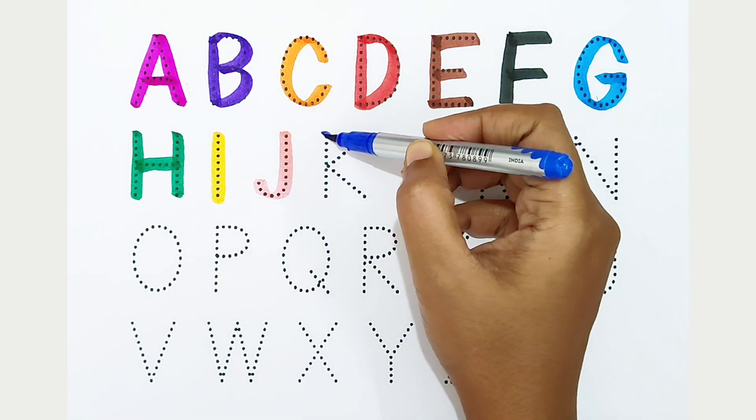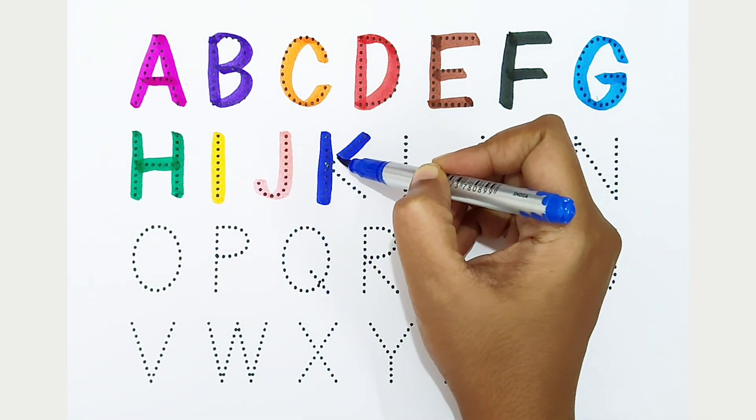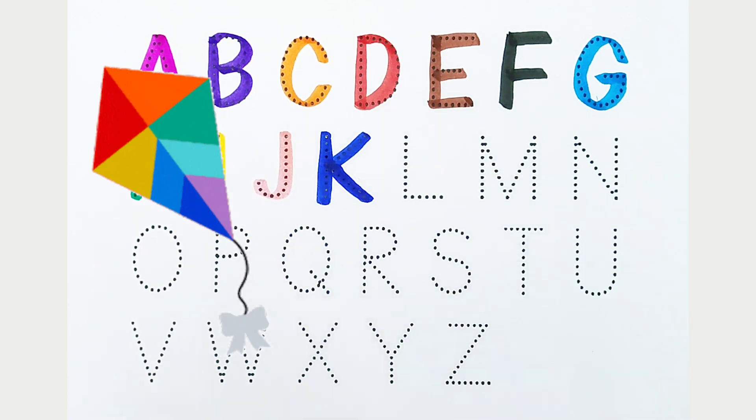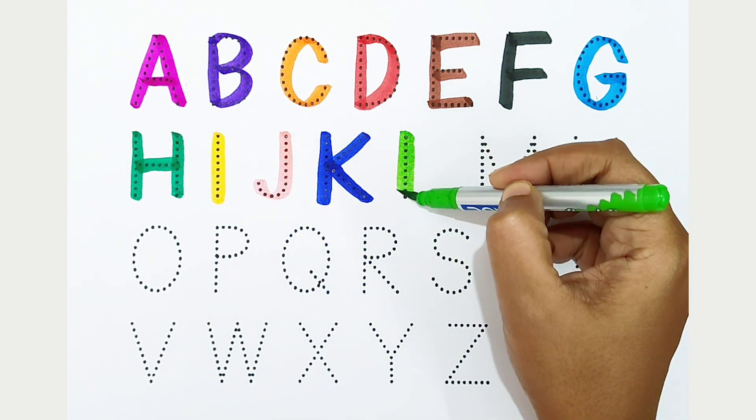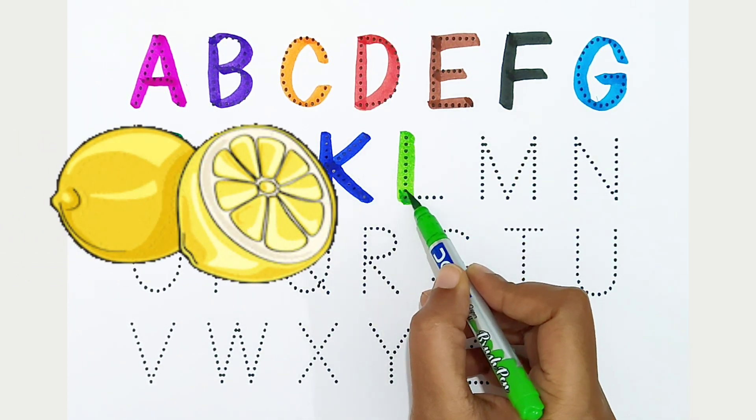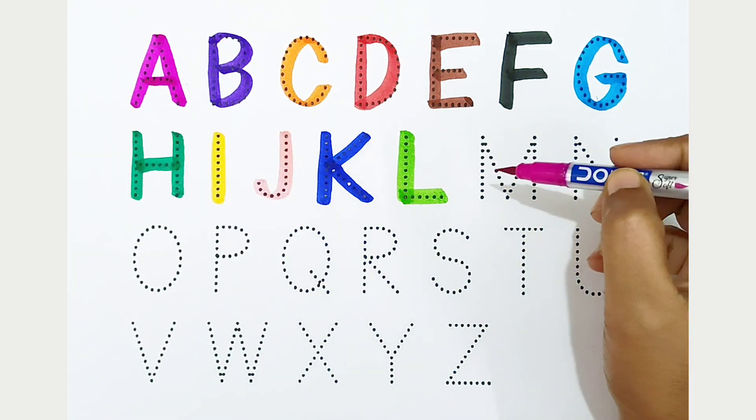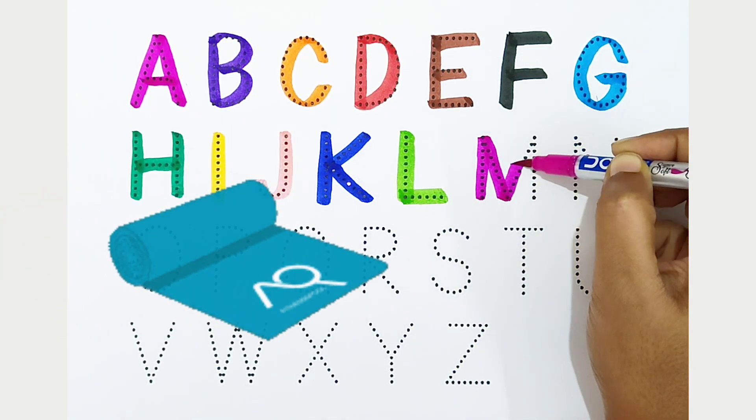K, dark blue color, K is for kite. L, light green color, L is for lemon. M, dark pink color, M is for mat.